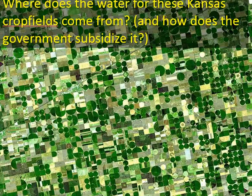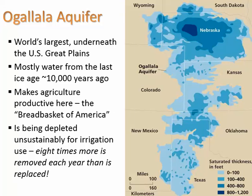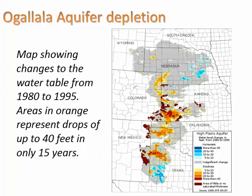Here we see major irrigation going on in Kansas where it rains very little. So where are they getting their water from? It's called the Ogallala Aquifer — that's where they get it for the most part. It's huge, covering all these states. This is very old water, mostly from the last ice age 10,000 years ago.